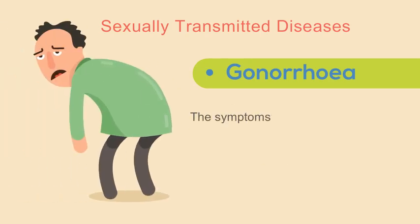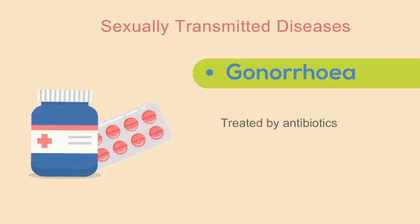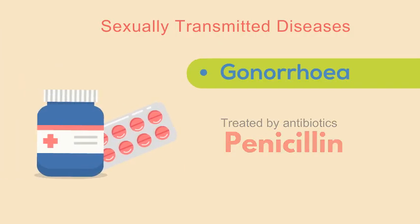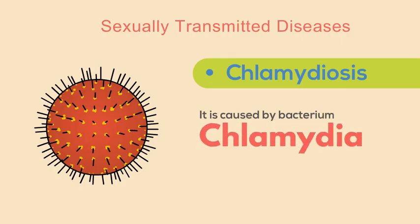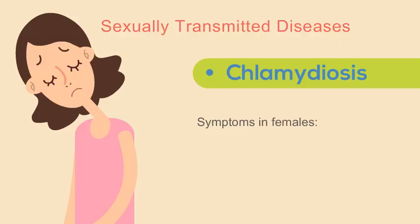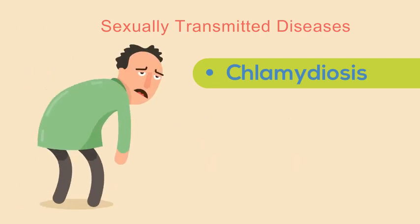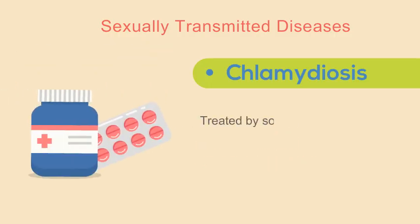The symptoms of gonorrhea include swelling of testicles in males and vaginal discharge in females. This disease can be treated by antibiotics such as penicillin. The second disease is chlamydiosis, caused by the bacterium Chlamydia trachomatis. Symptoms in females may include vaginal discharge and painful urination, while in males the main symptoms are penile discharge and swelling in testicles.